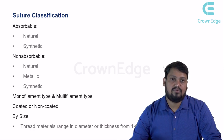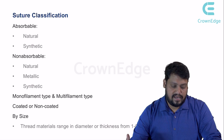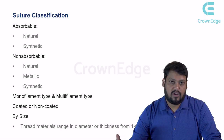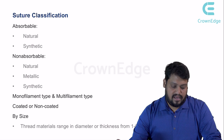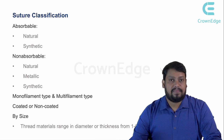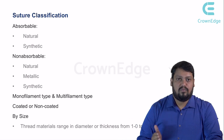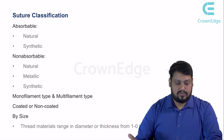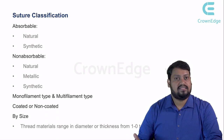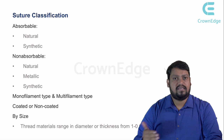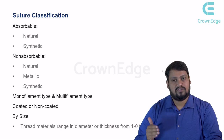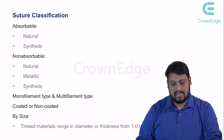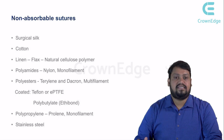In absorbable sutures we have natural and synthetic. In non-absorbable we have natural, metallic, and synthetic. Monofilament and multifilament types are present in both absorbable and non-absorbable categories. These classifications are intermixed and also separated based on individual properties.